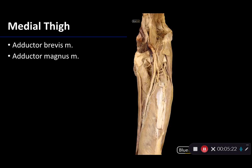Moving deeper now — the adductor longus has been removed, which highlights two other muscles. The superiormost is the adductor brevis. Adductor brevis takes its proximal attachment to the inferior pubic ramus, and like other adductor muscles, its distal attachment is on the linea aspera of the femur. Like other adductor muscles of the thigh, it is going to adduct the hip, and like the adductor longus, it's also a very important synergist for both gait and posture.